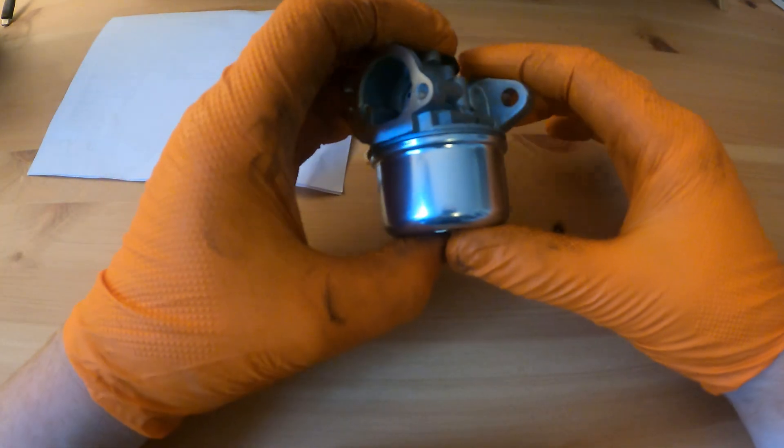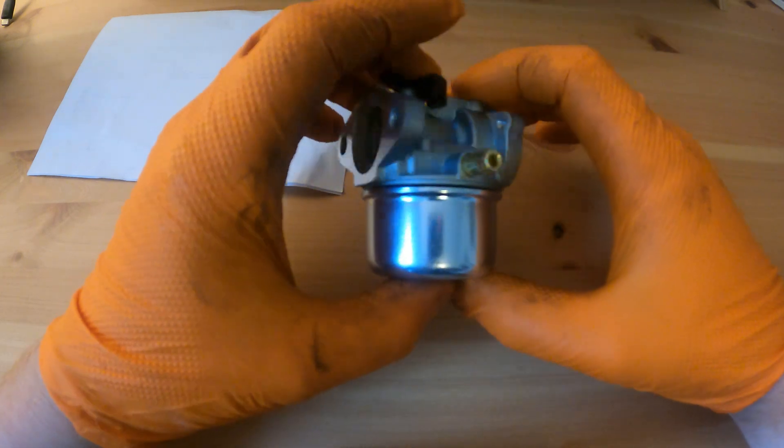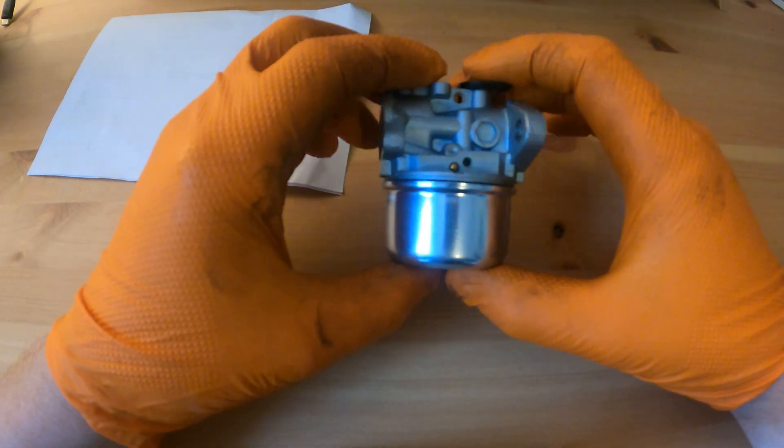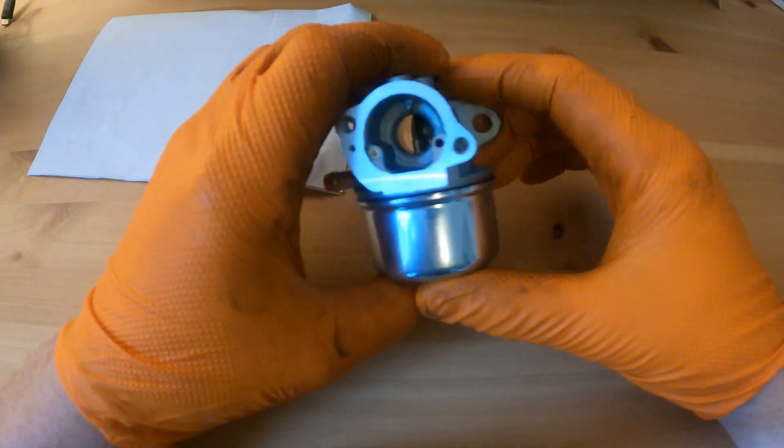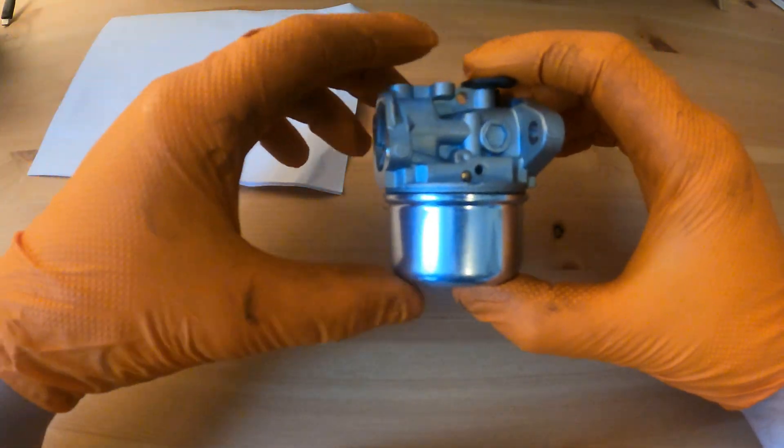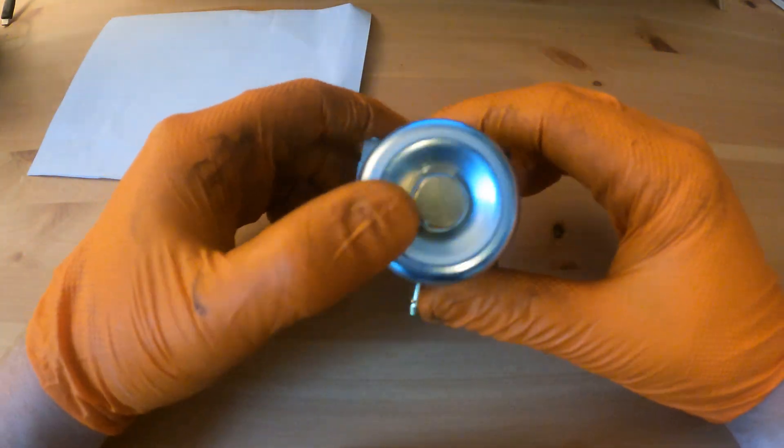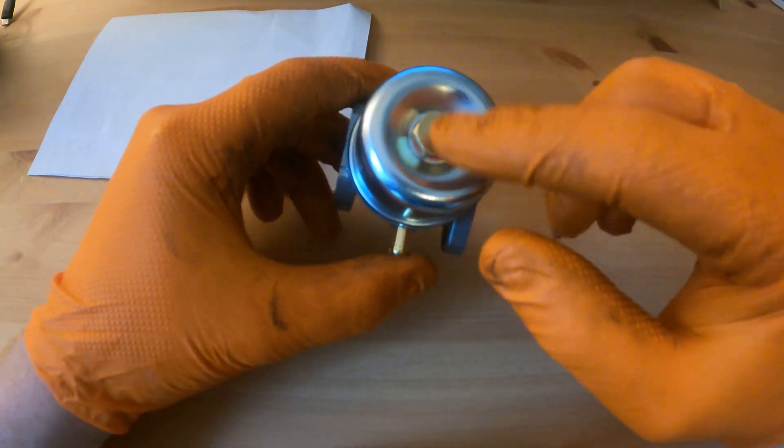If you've never taken apart a carburetor before, it's very important that you keep track of all the parts that come out and the order in which they came out. With this one, not so much, it's a very simple carburetor. I've just got a bit of paper there that we're just going to lay the parts out when we take it apart. The first thing we're going to do is remove this bottom cover retaining bolt which holds the float bowl on.